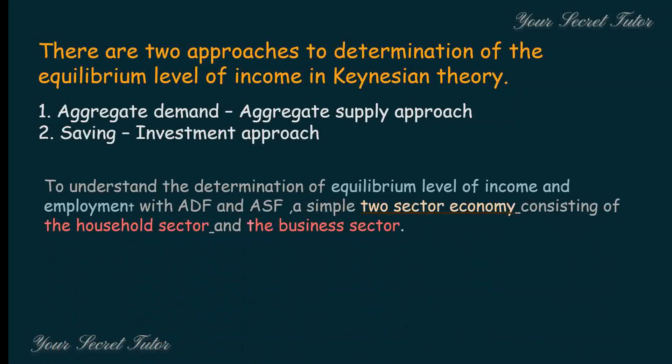To understand the determination of equilibrium level of income and employment with Aggregate Demand Function and Aggregate Supply Function, a simple two-sector economy consisting of a household sector and a business sector is considered. This two-sector model establishes the equilibrium level of income and employment.